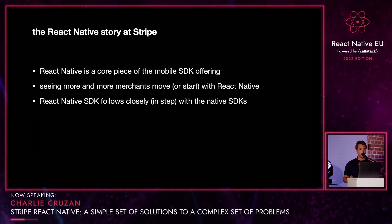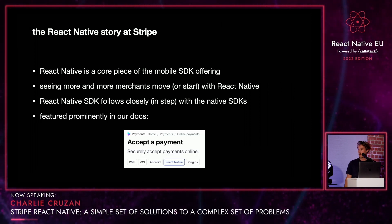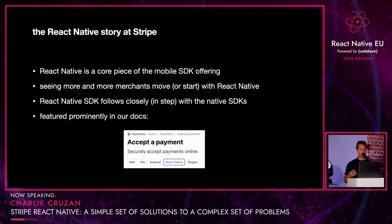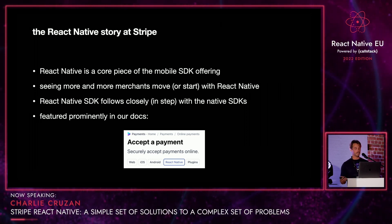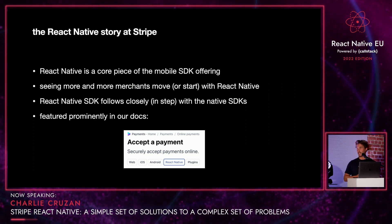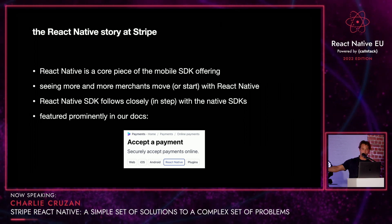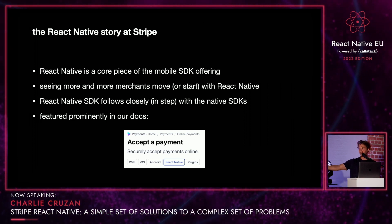For new payment methods that Stripe launches, we want React Native there from the get-go because we have a big user base on React Native. React Native follows essentially in step with our other mobile SDKs, to the point where they're all feature-parity. So no platform is left without, no developer is left without. React Native is featured really prominently in our docs — it's right there alongside web, iOS, and Android. It says React Native, which is so cool.